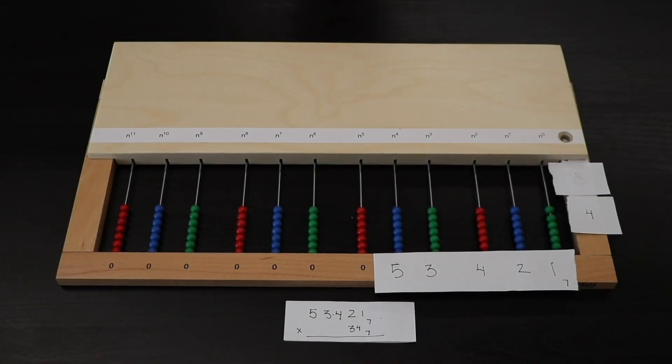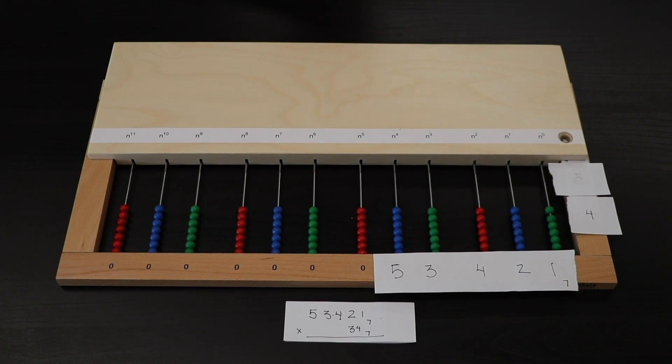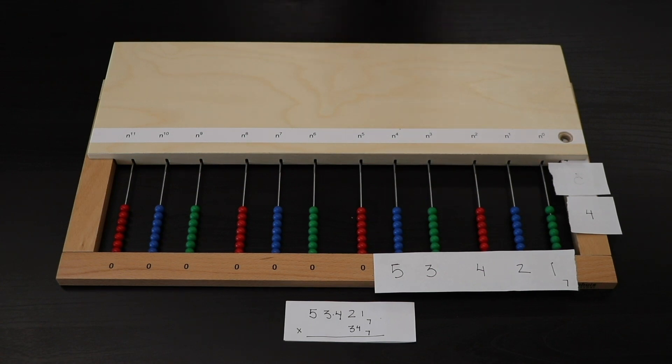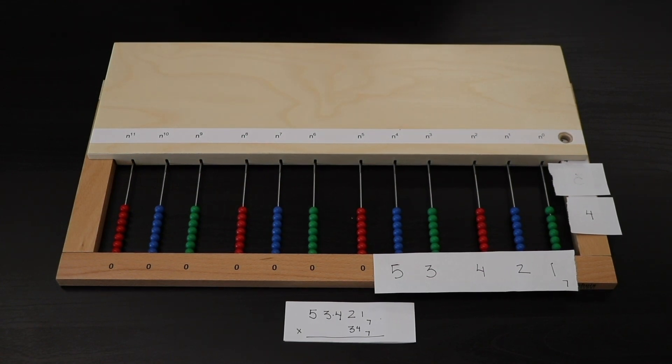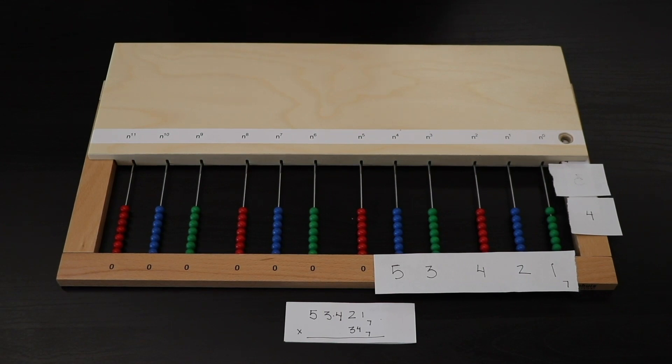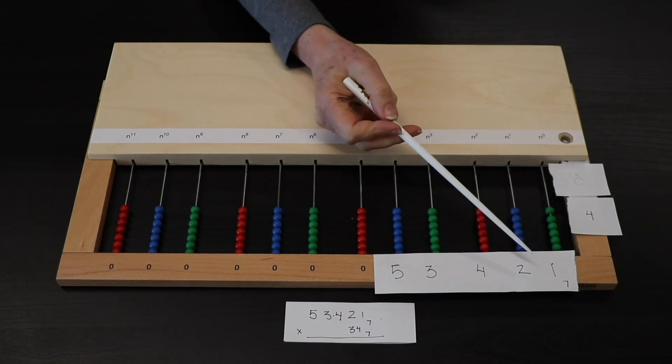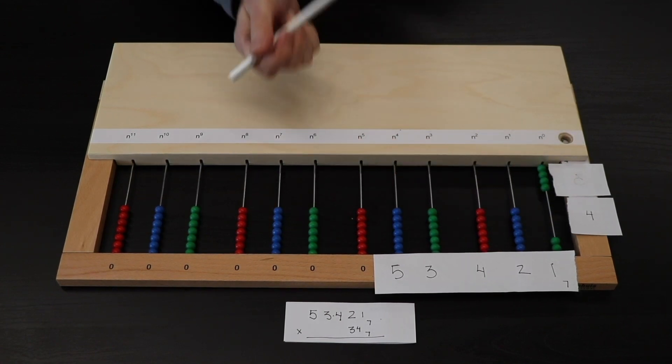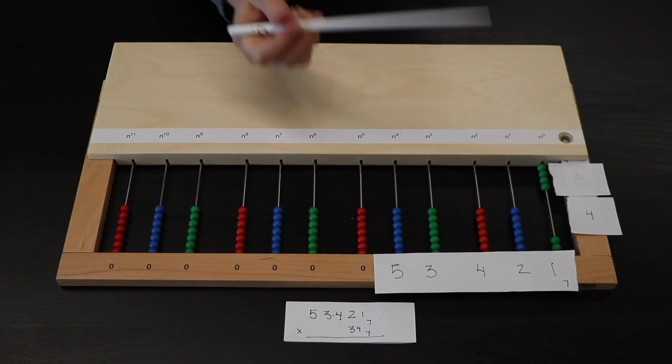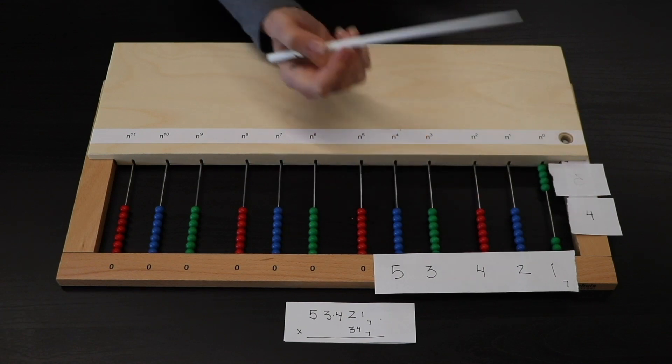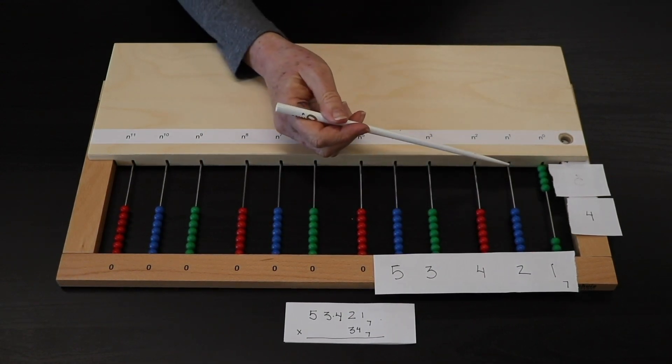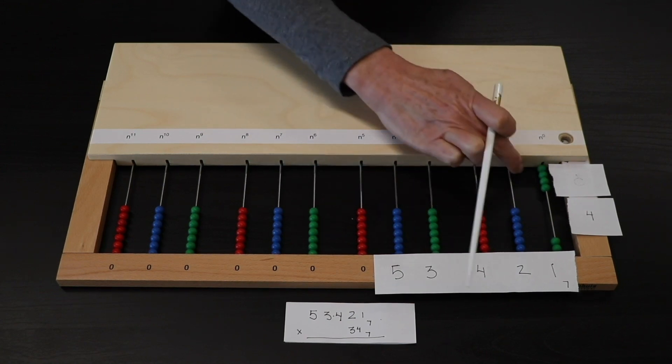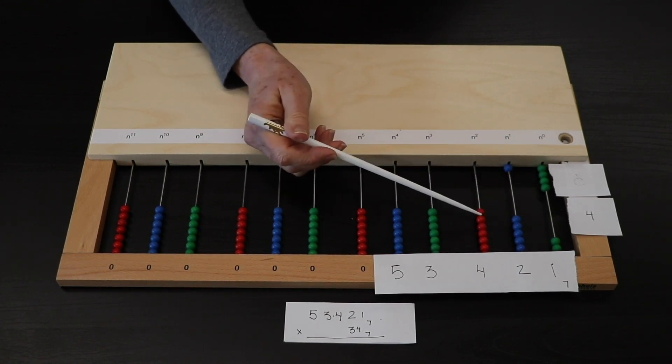So we can also use the multi-base bead frame to do a double-digit multiplication problem in base 7. Again, we can build sets or the child can do their multiplication facts. 1 times 4 is 4 in base 7. 2 times 4 is 8. 8 in base 7 is 1, 1.